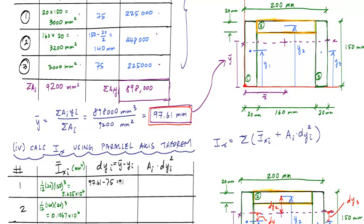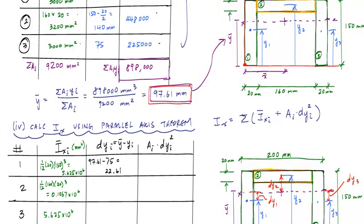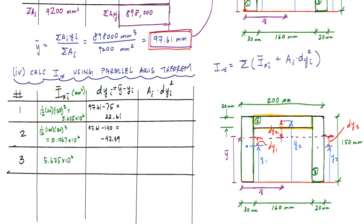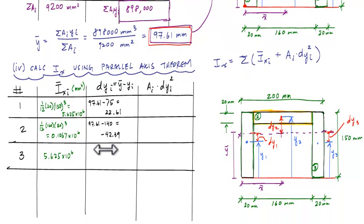If I go through the same process right here, this would be 97.61 millimeters minus 140 millimeters, which will give me negative 42.39. And the negative doesn't matter. It doesn't matter because it eventually gets squared later on in the process that you follow. And then here, this is going to be the same value as area 1 here. So this is also 22.61.